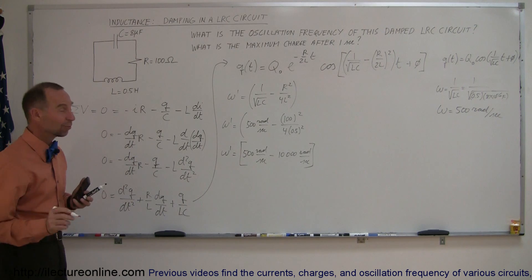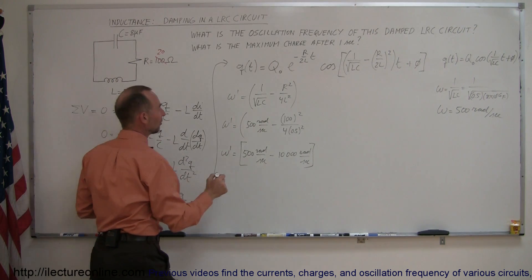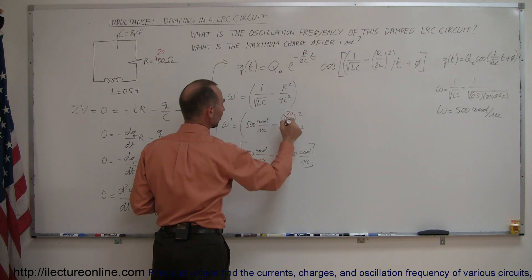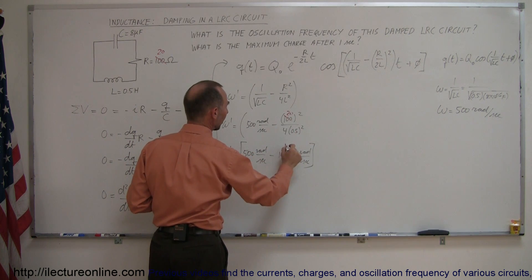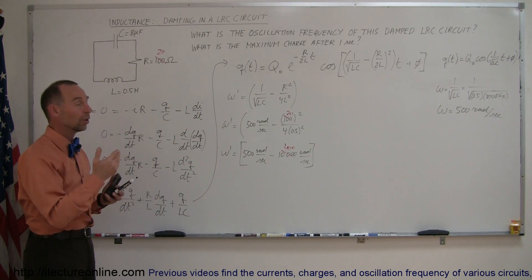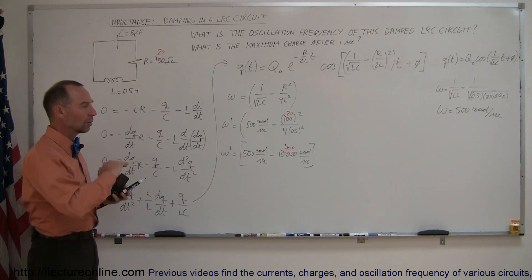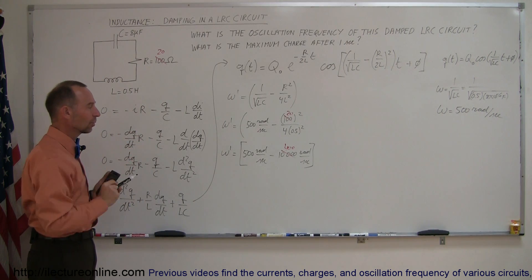So just to kind of get a feel for what it would be like if it wasn't quite as big of a resistor, let me make the resistor a little bit smaller. So let's say that we had a 20 ohm resistor instead of a 100 ohm resistor and if we change it to 20 ohms then 20² would be 400. And then you can see your new oscillation frequency would now be 100 radians per second instead of 500 radians per second. So it would oscillate a lot slower because of the resistor in there.